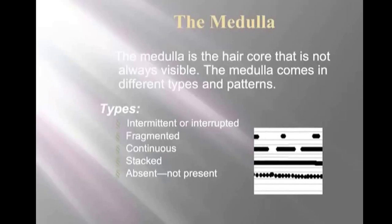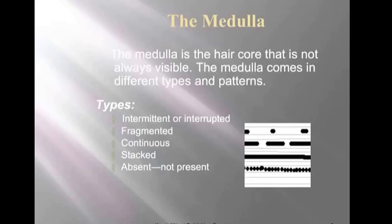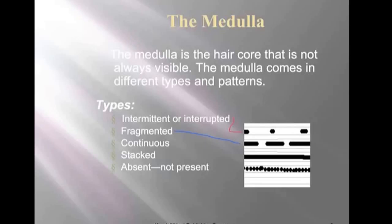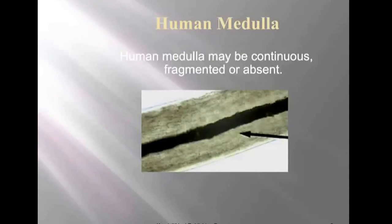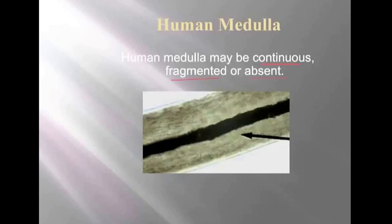The medulla is one you'll be able to identify easily under magnification — it's that band, that core, running through the center of the hair shaft. There are several patterns. Intermittent or interrupted is going to be periodic, with perhaps more spaces than medulla. Fragmented is the opposite — a pretty solid medulla but broken up, so fragmented has more medulla than intermittent. Continuous is a solid shaft. Stacked looks like a bunch of little beads of medulla coloring down the length of the shaft. And then absent means no medulla present at all.